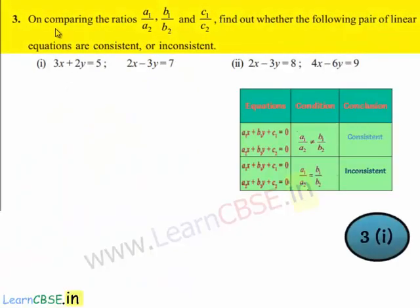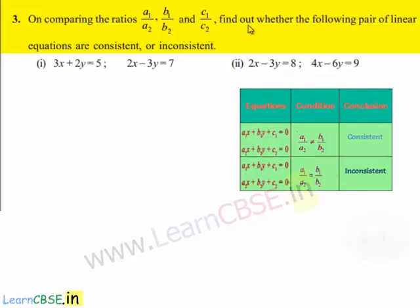Coming to the third problem, on comparing the ratios a1 by a2, b1 by b2, and c1 by c2, find out whether the following pair of linear equations are consistent or inconsistent.